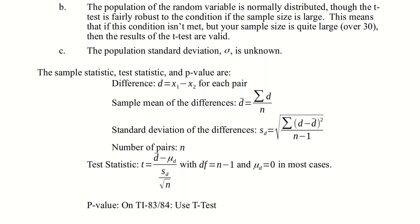One thing to point out: in the test statistic formula, we need to know what mu sub d is — that is the mean of the differences. But this is a hypothesis test, and we're allowed to assume the null hypothesis. In most cases, the null hypothesis is that there's no difference between the two populations, that is, that the mean of the differences is zero. So that makes this formula just a tad nicer. The p-value will come to us using a calculator — we'll use the t-test to do that.